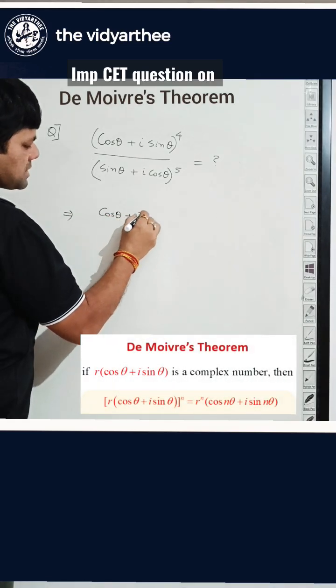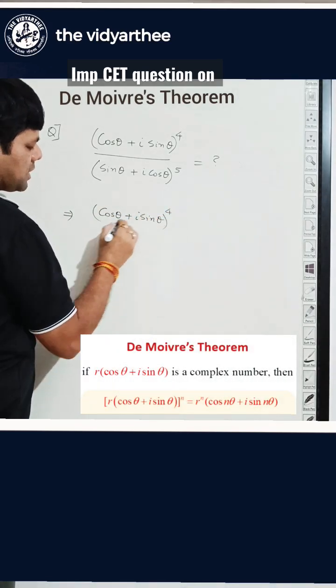How to solve this? We'll keep it as it is: cos theta plus i sine theta to the power 4. We'll use De Moivre's theorem in the last step.